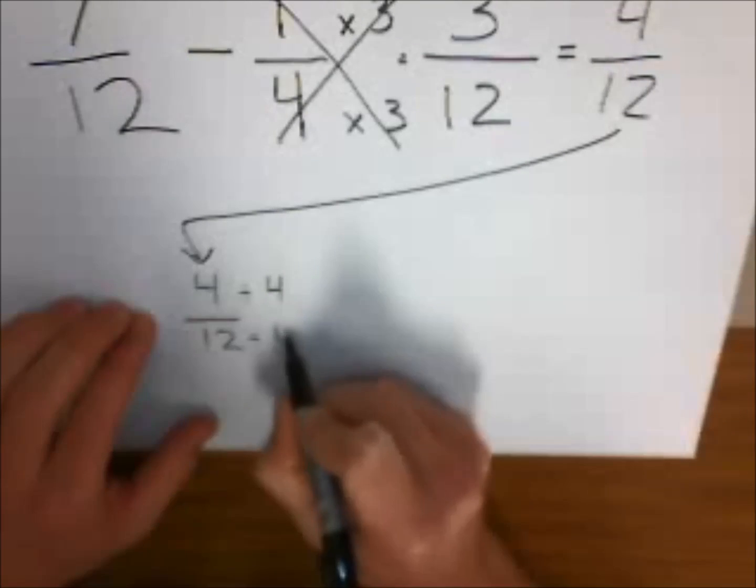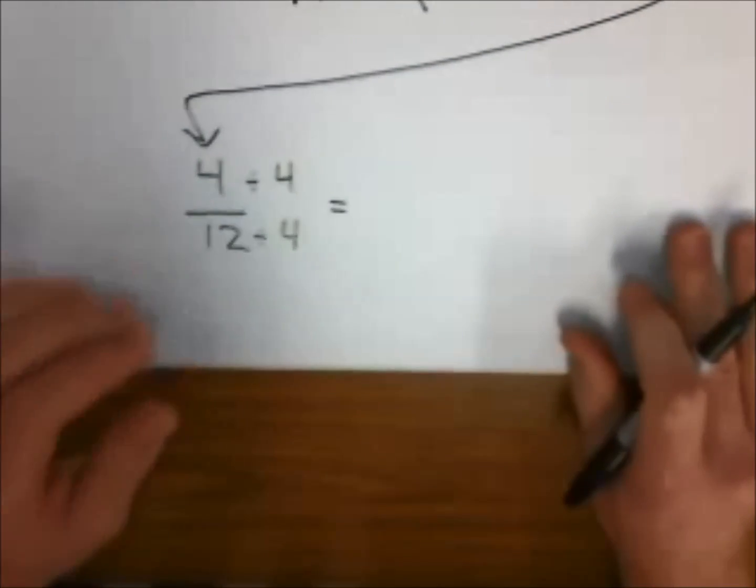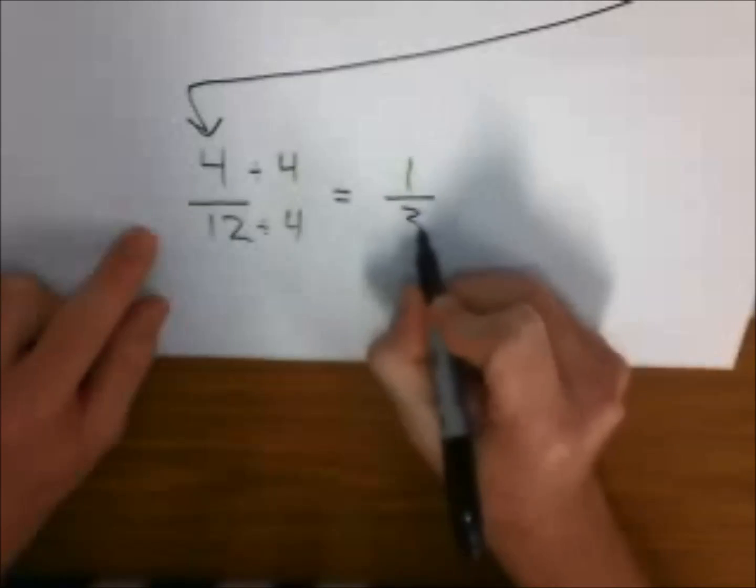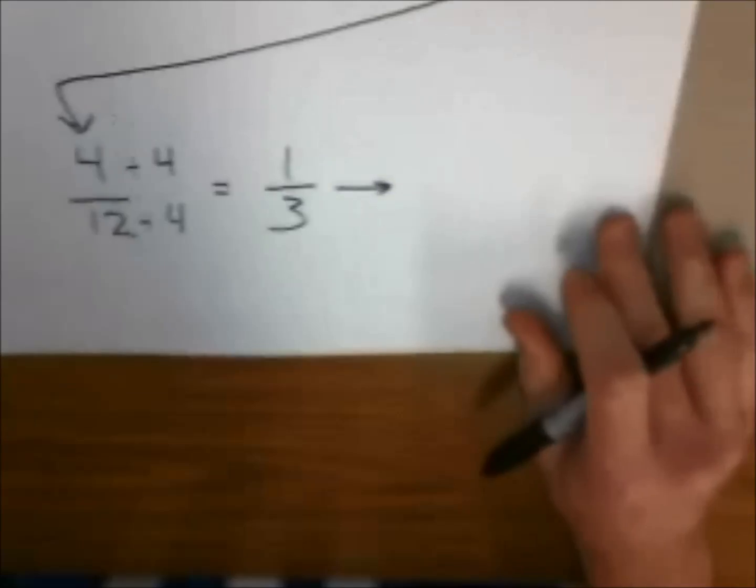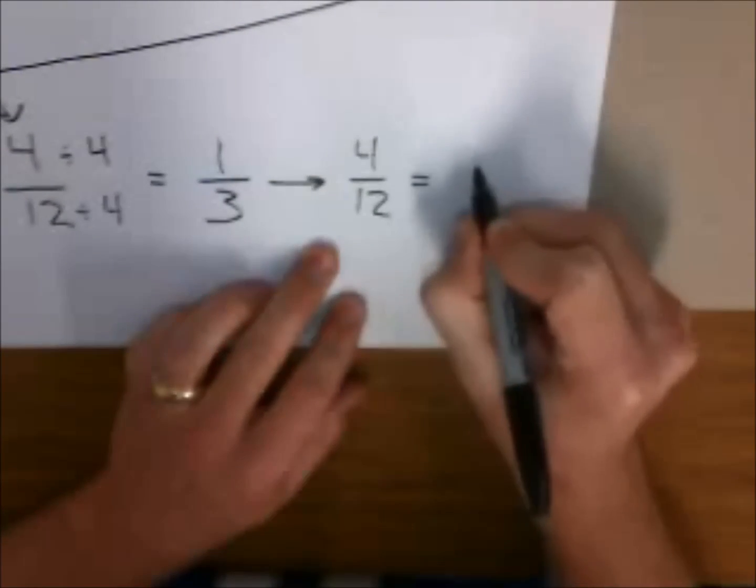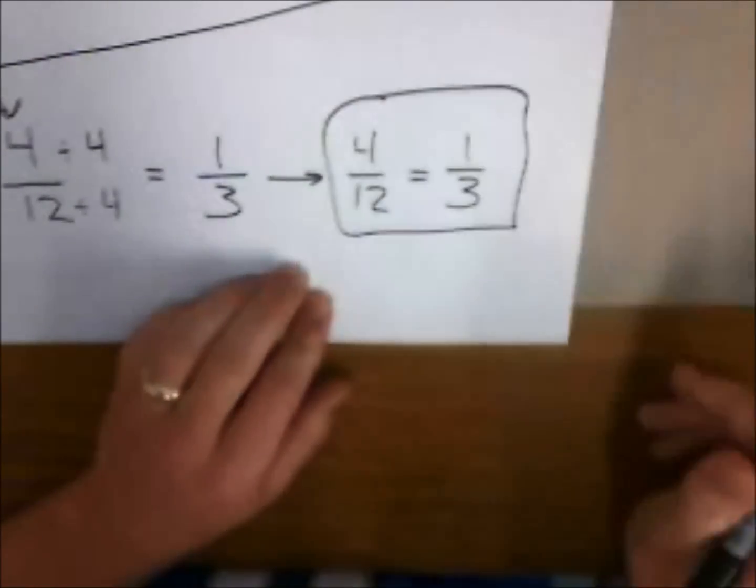Our divisor is 4, same to the bottom as the top. Although 4/12 is a correct answer, we also know this is the same as 1/3. So we can say 4/12 equals 1/3, and that is part one.